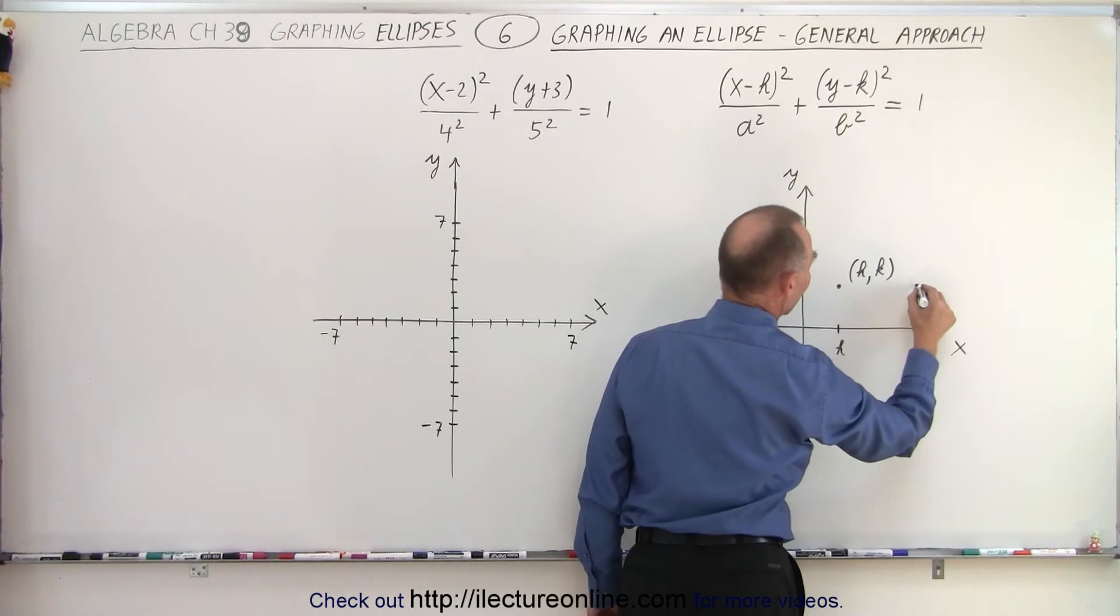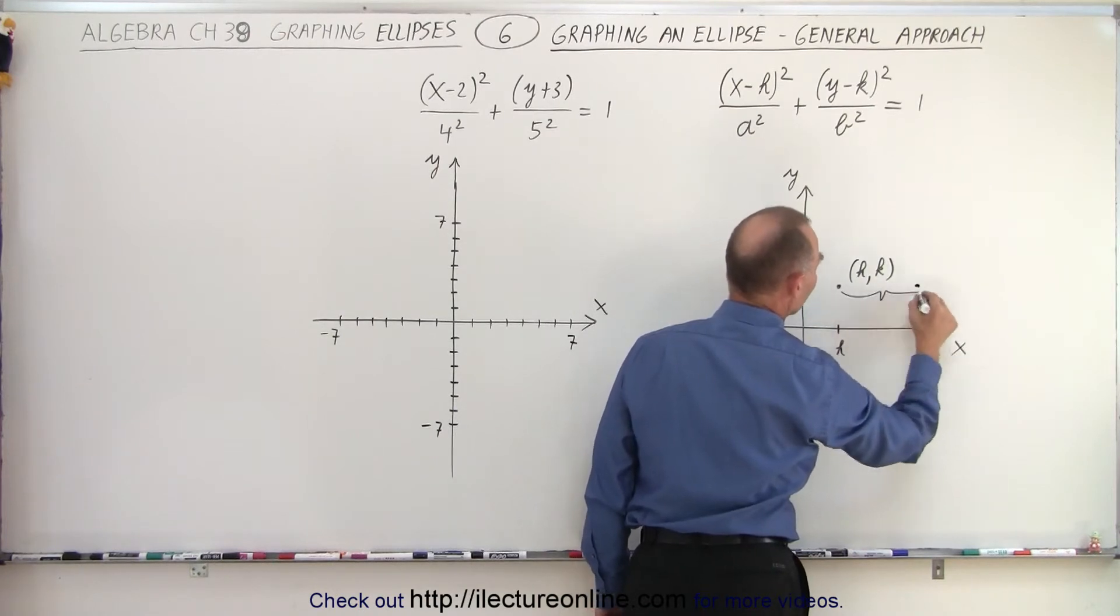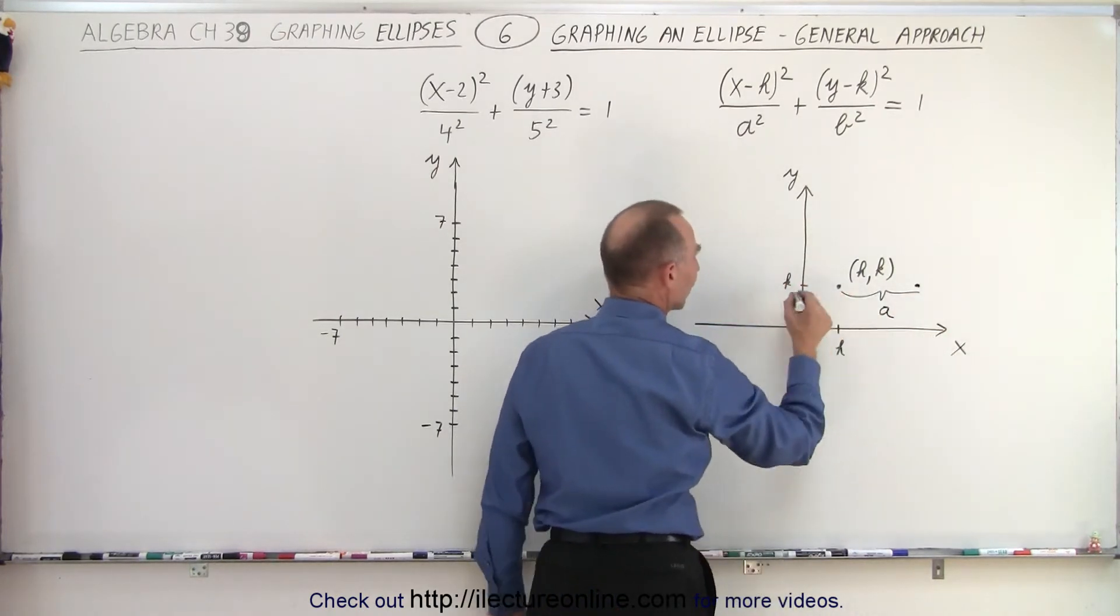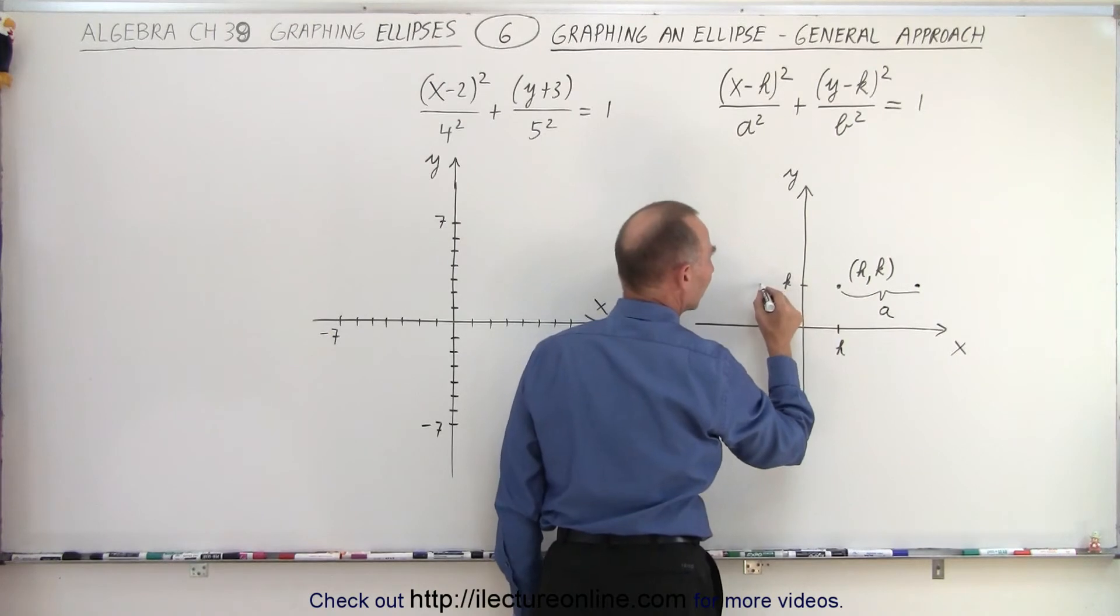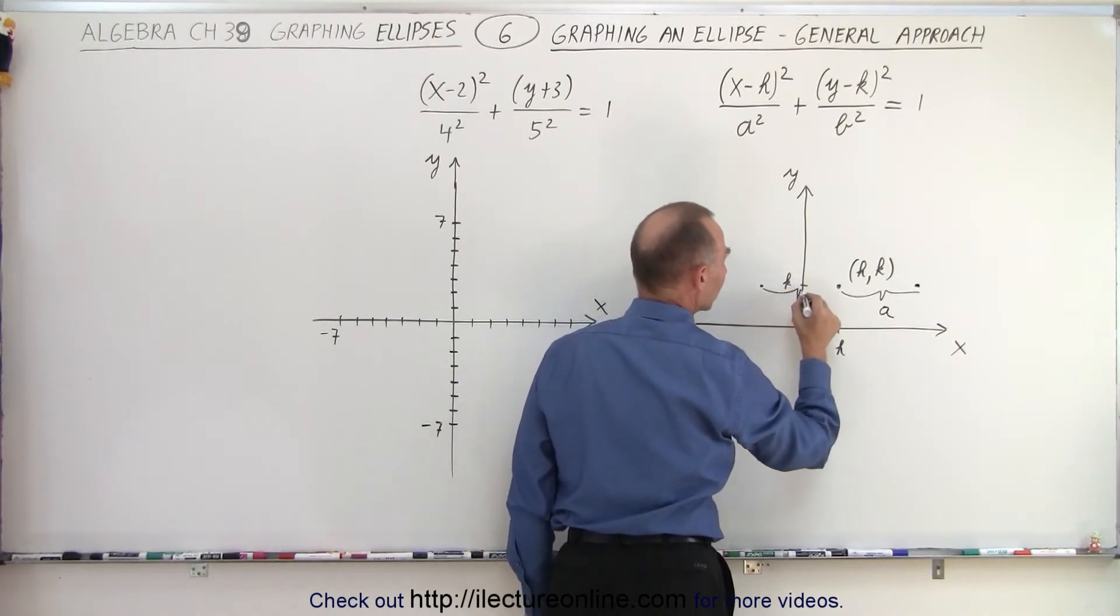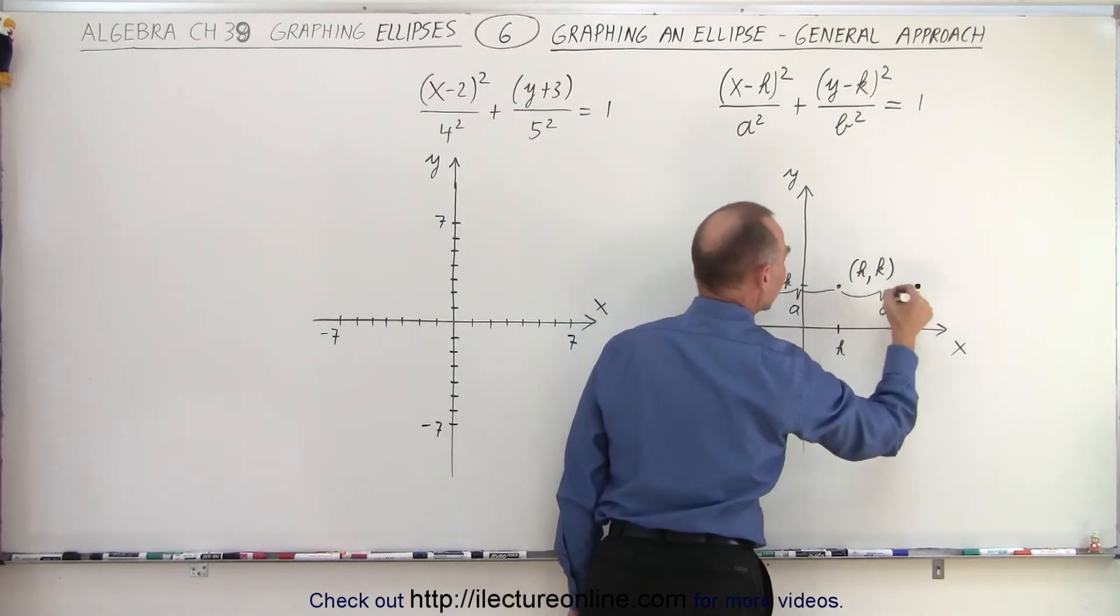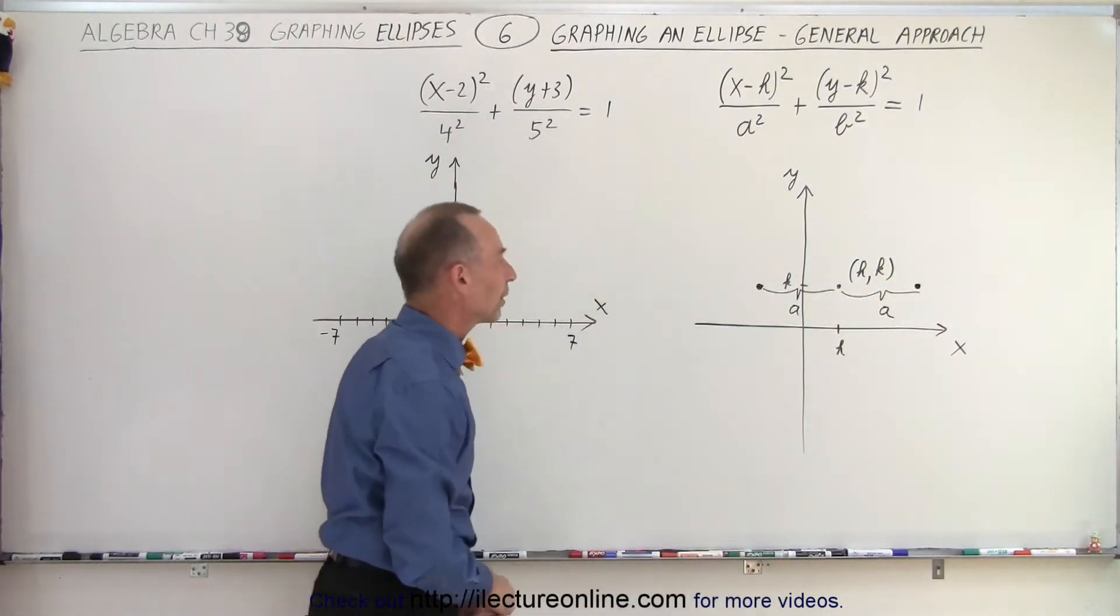So we move to the right at distance a, like this. So if this here is a distance a, and then over here, we move to the left a distance a, like this. And so that finds the two points to the left and to the right of the central location.